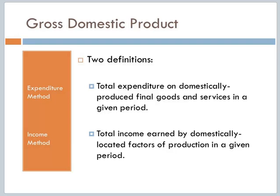Now, these two definitions turn out to be equivalent — they'll give us the same number, at least in theory. The reason for that is, if I spend a dollar, that means somebody else out there had to receive that dollar. So for every dollar I spend, there's someone else for whom that dollar becomes their income. So expenditure has to equal total income, and total expenditure will equal total income.